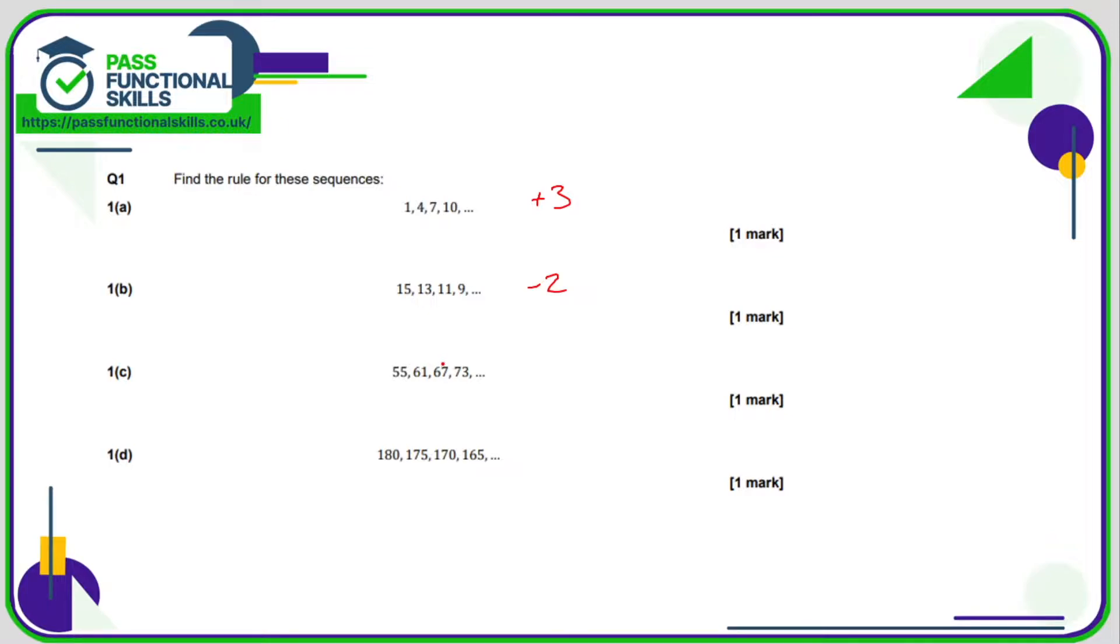55, 61, 67, so to go from 61 to 67 that's quite easy to calculate, that's plus 6. We're just adding 6 to the previous number. 180, 175, 170, we're going down in 5, so we're subtracting 5 from the previous number.